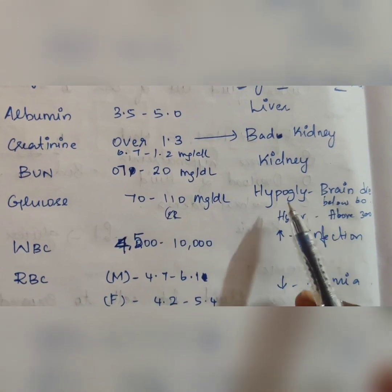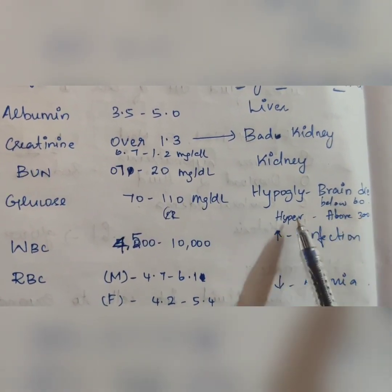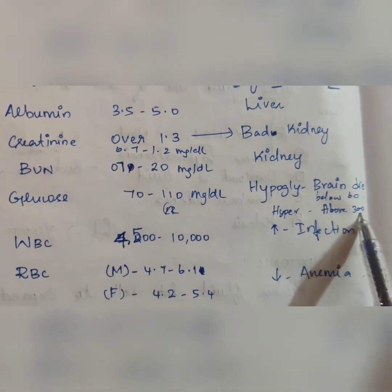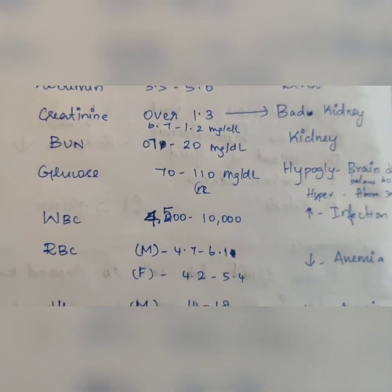In case there are changes, for example, hypoglycemic or hyperglycemic. Hypoglycemic is below 60, hyper is above 300. Hypoglycemic can also lead to brain death.